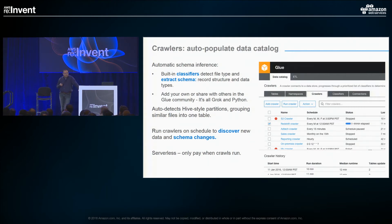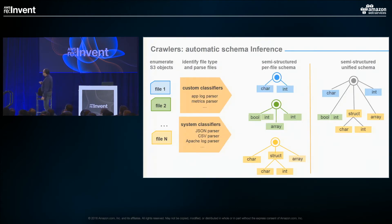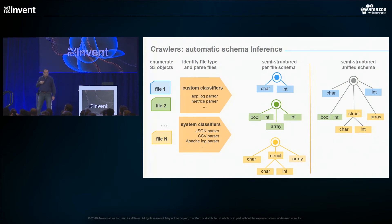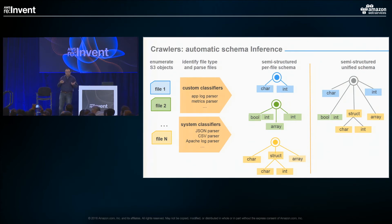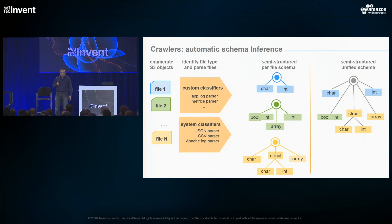Let's dig in a bit more into crawling and classification. Let's talk about how automatic schema inference works. Say you parsed something out and you've got a bunch of different profile schemas with a variety of different things — that might be your profile schema. You need to understand that, but then you want to potentially unify that schema into the union of all of them, because your data does change over time. People do have slightly different formats in each of their tables or files, but you want to look at it as though it's one table.